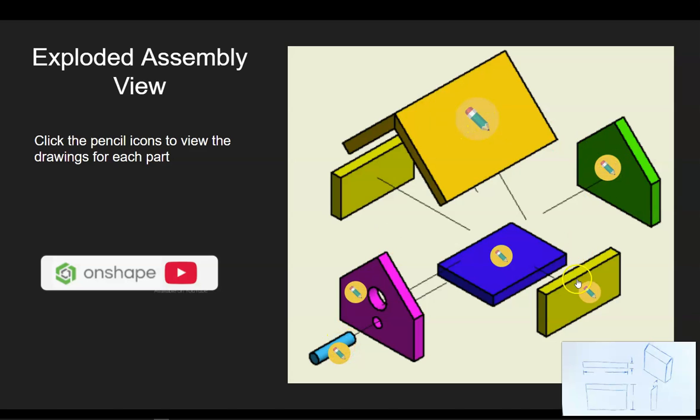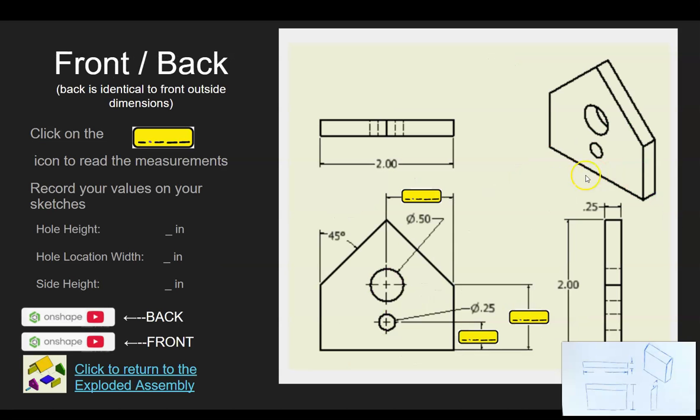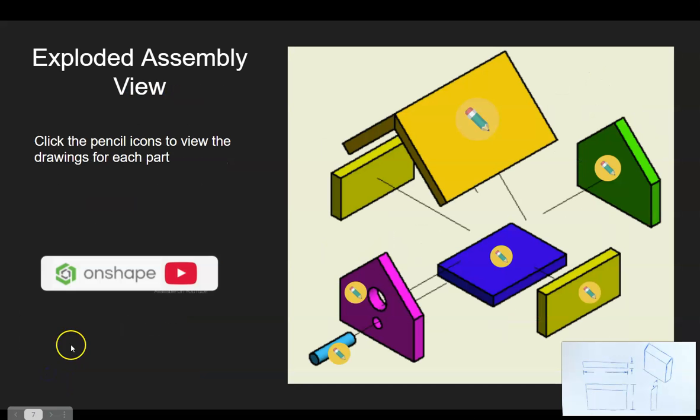The pencils on each part are links to the drawings of the object. If I want to click on this pencil button on the green part, that'll take me to the drawings for the front and back. You can see I've got separate videos to help you out with the front and back, and we've got measurement links here. We get back to the exploded assembly view by clicking the little exploded assembly icon in the bottom of the page.